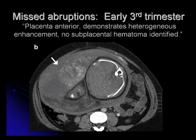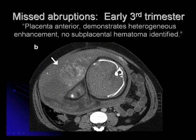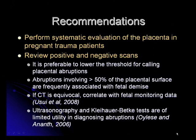This is another example of a missed abruption due to a large retroplacental hematoma occurring in the early third trimester. The original dictated report stated that the placenta demonstrates heterogeneous enhancement and that there was no subplacental hematoma identified. When in fact, if you look carefully, you can see an undermining of the placenta by a large space-occupying density similar to the density of the myometrium. Our data suggests that a systematic evaluation of the placenta in all pregnant trauma patients would be beneficial in improving sensitivity of detection. We encourage continued review of scans positive for placental abruption and normal scans showing normal placental anatomy. It is preferable to lower the threshold for calling placental abruptions, as any abruption involving more than 50% of the placental surface has been frequently associated with fetal demise.